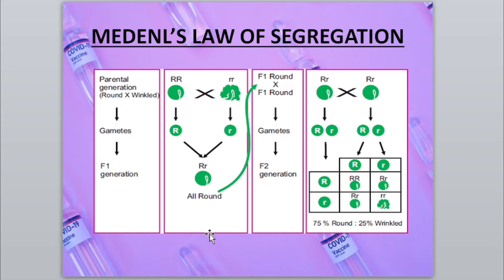When Mendel crossed a true breeding round-shaped seed plant with a true breeding wrinkled-seeded plant, the F1 (First Filial) generation was produced. The cross of F1 gives the Second Filial or F2 generation. Similarly, when a true breeding tall plant was crossed with a short plant, all outcomes were tall — showing tallness is the dominant trait and shortness is the recessive trait — and using correct principles of statistics, the result was again a 3:1 ratio.